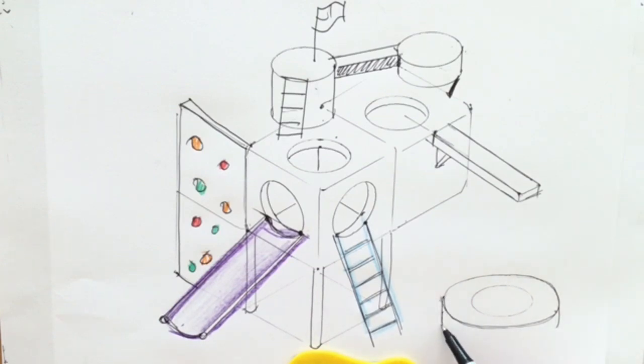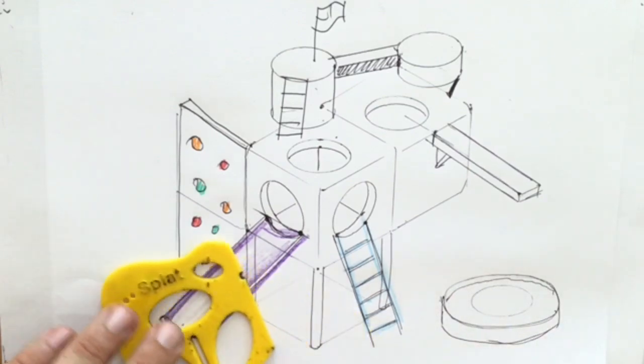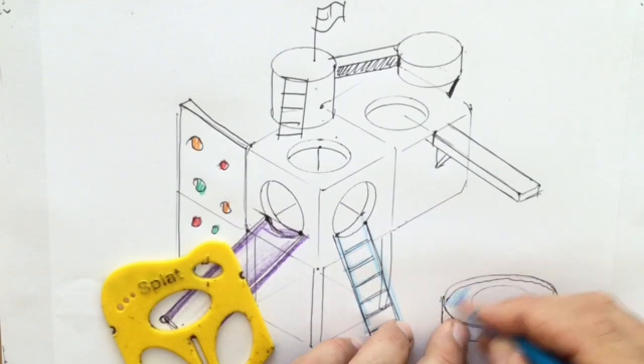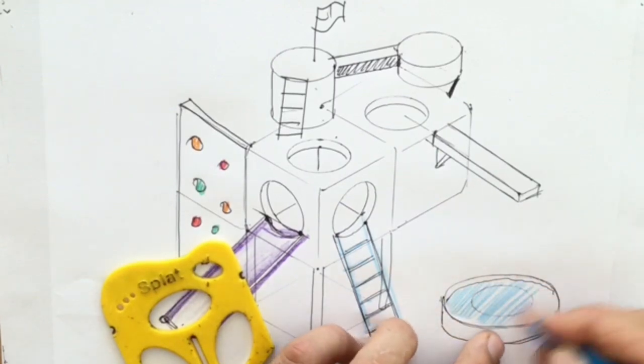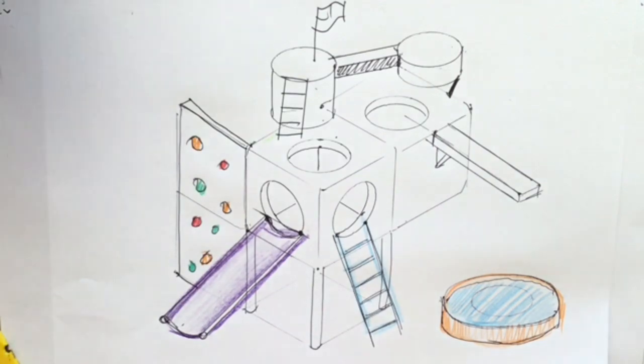I'm going to copy that shape down here. A little bit further. Let's add some water in there. Doesn't look very poolish yet. Let's add some water. Let's try some rendering.